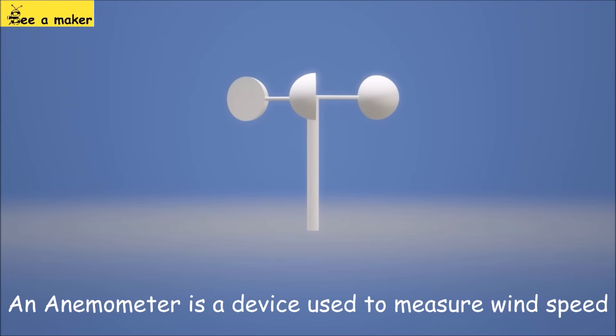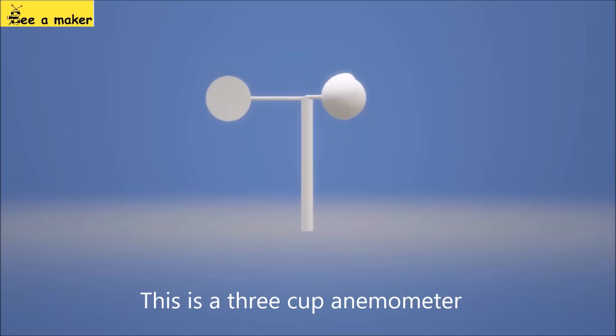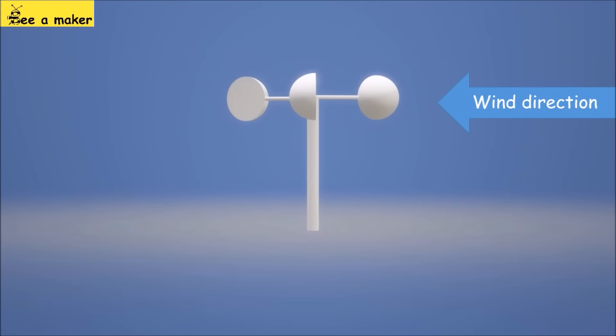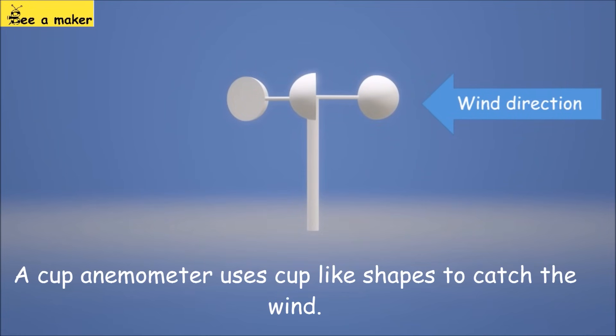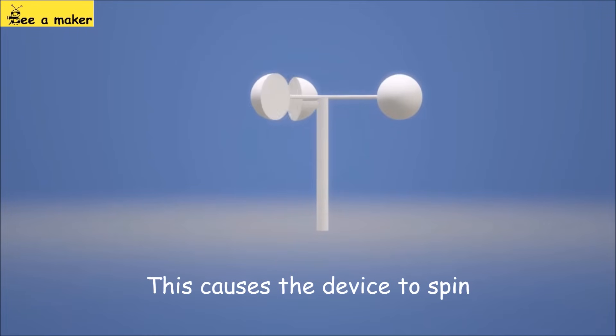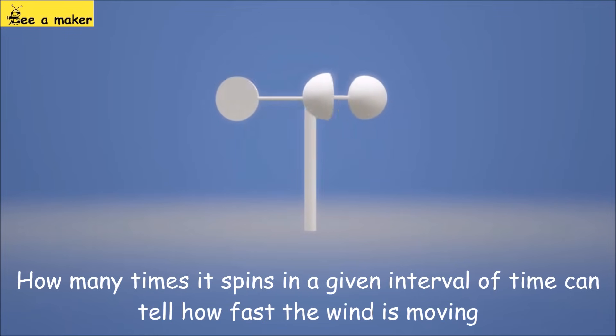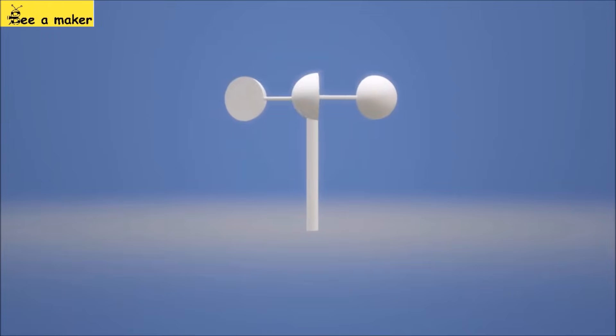An anemometer is a device used to measure wind speed. This is a 3 cup anemometer. A cup anemometer uses cup-like shapes to catch the wind. This causes the device to spin. How many times it spins in a given interval of time can tell how fast the wind is moving.